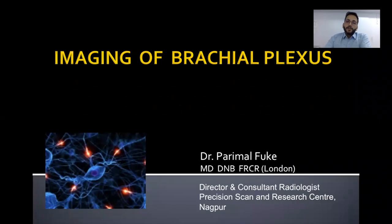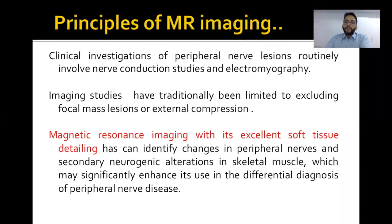Today we are going to discuss the imaging of brachial plexus. The clinical investigations of peripheral nerve lesions routinely involve nerve conduction studies and EMG. The role of imaging is traditionally limited to excluding focal nerve lesions or extensive complications.